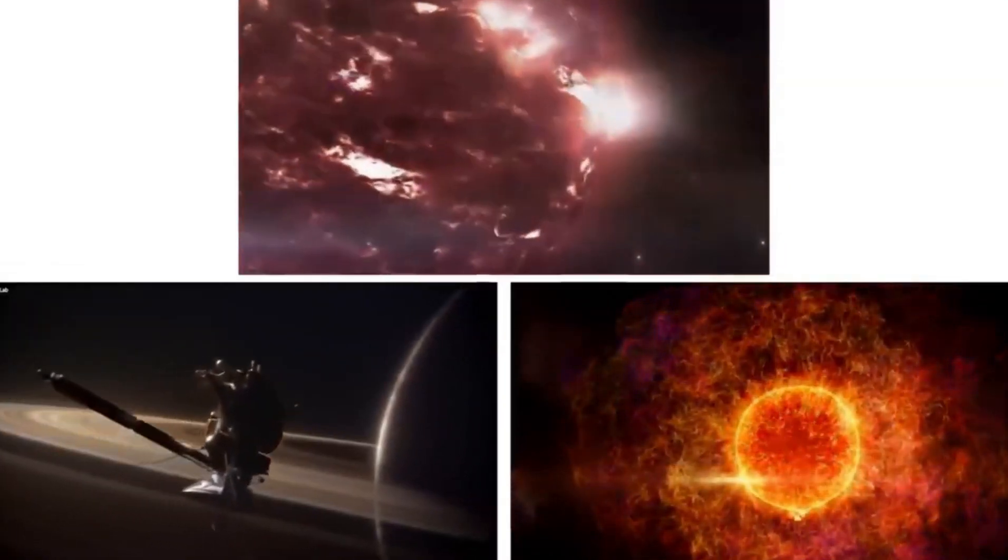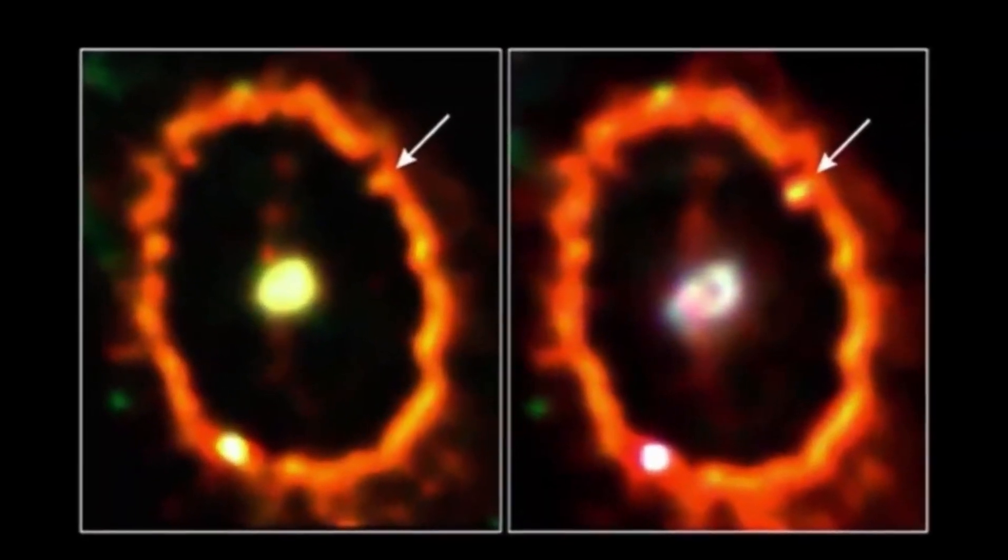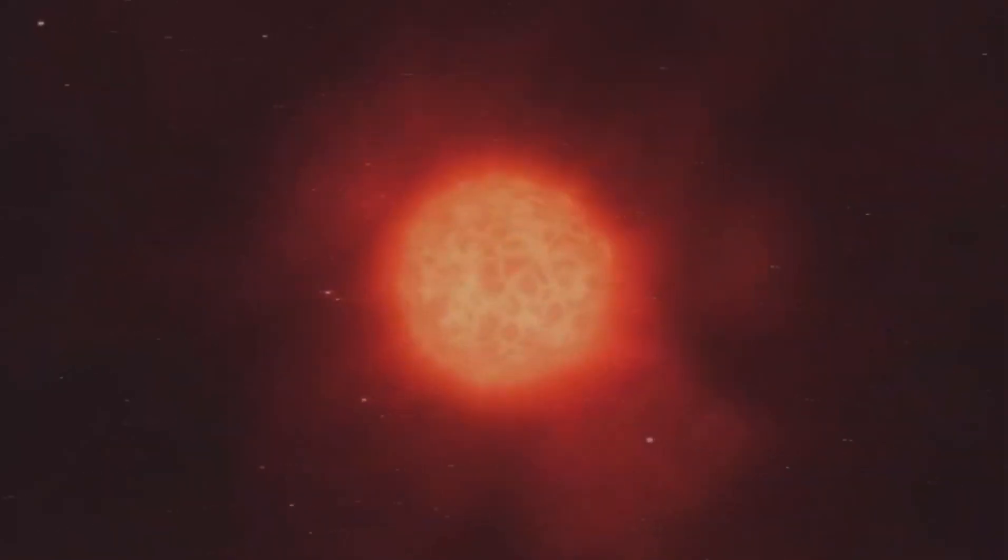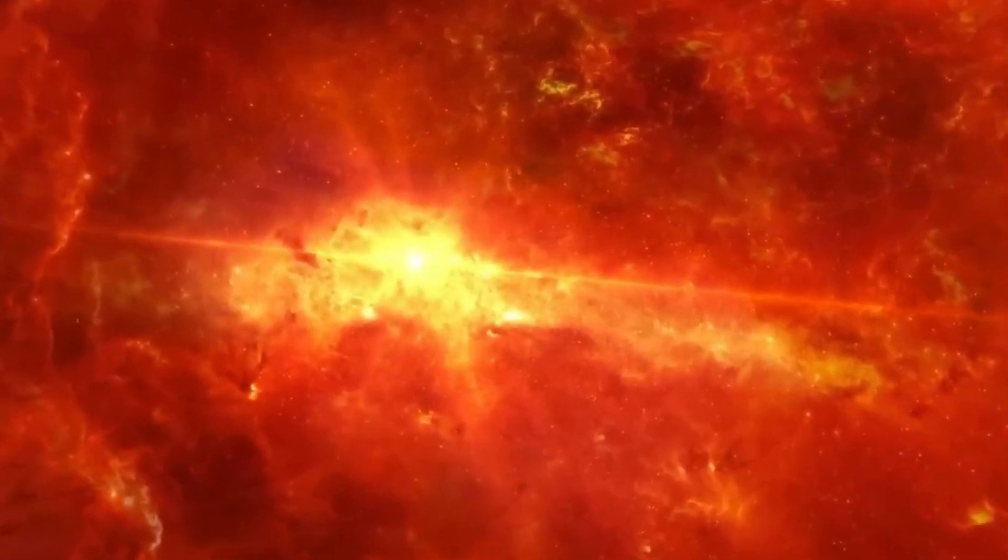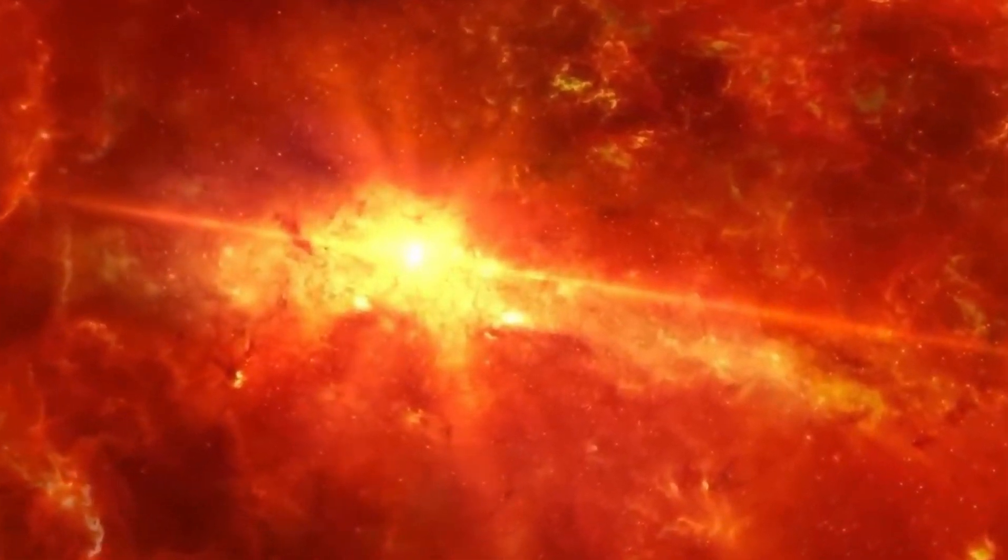Since the Great Dimming, Betelgeuse has exhibited altered behavior in terms of its light and radial velocity. Despite the absence of a grand explosion, Betelgeuse's current behavior is captivating. Its oscillation between dimming and flaring unveils fascinating physics.